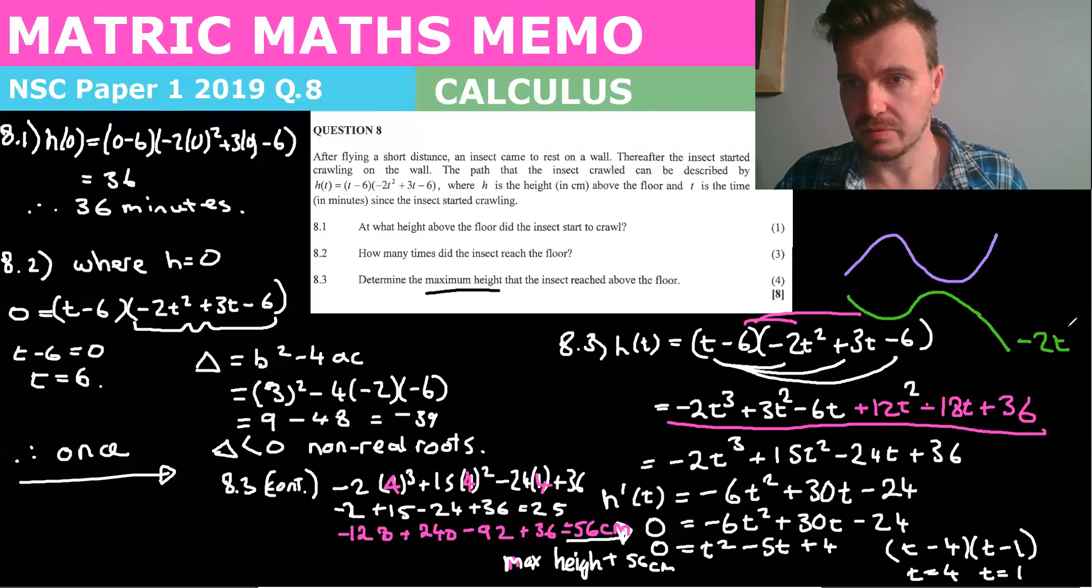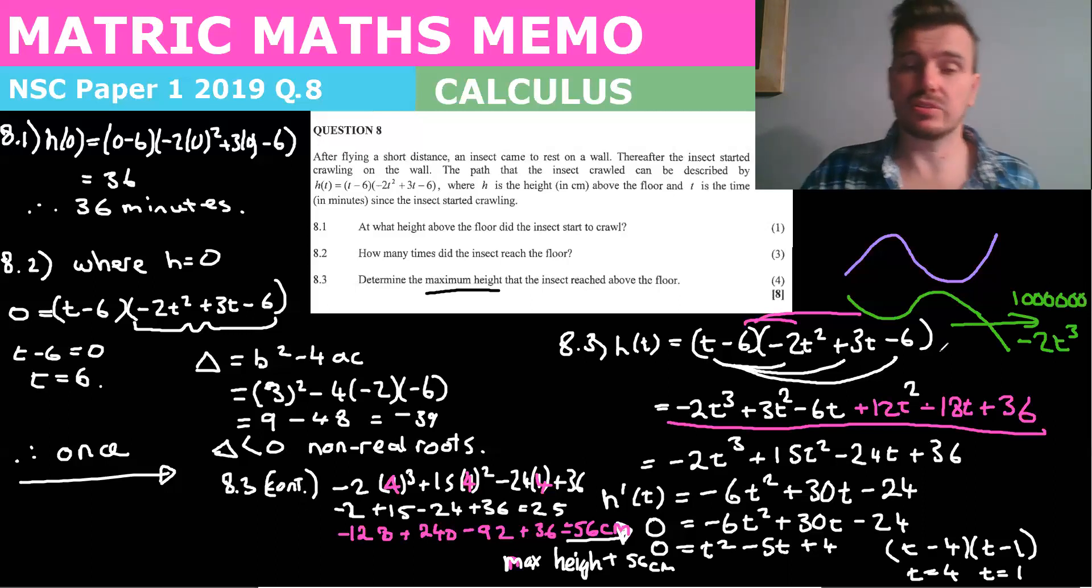So yeah, negative two t cubed, right? So when t approaches this very large number, if you don't understand any of this, it's not too bad. You can just do it the simpler way and skip the video, but it is always good to understand these questions. So as t gets to a very, very large number, say a million, that the height becomes a very small number because you've got negative t cubed, negative two t cubed. So as t approaches the infinity, you get a very small number. And so you end up with this graph.